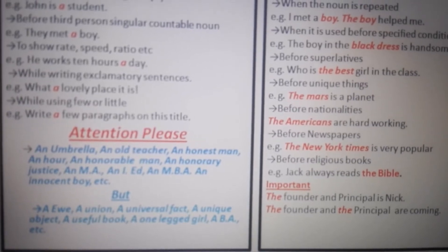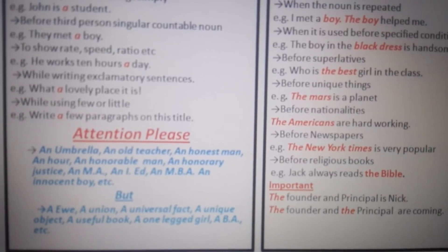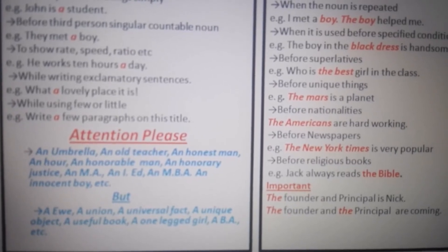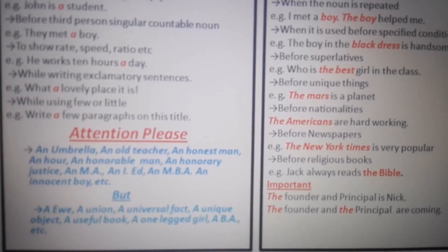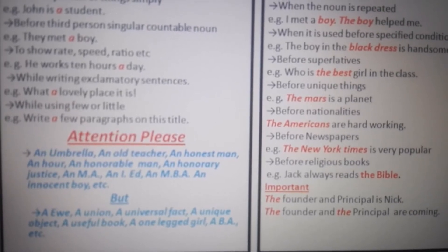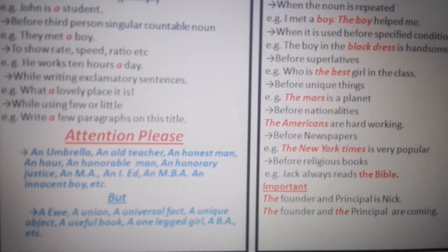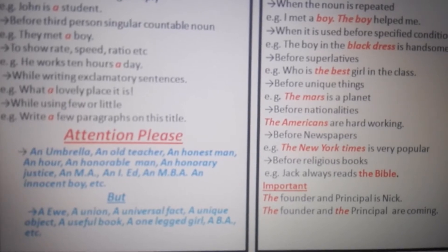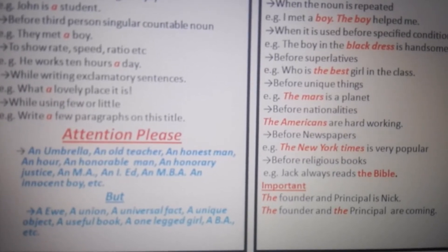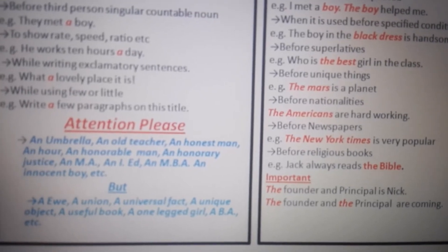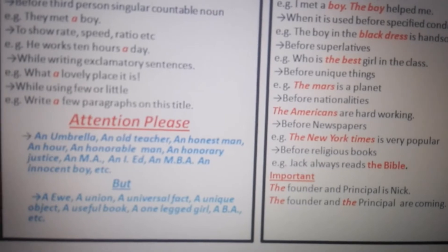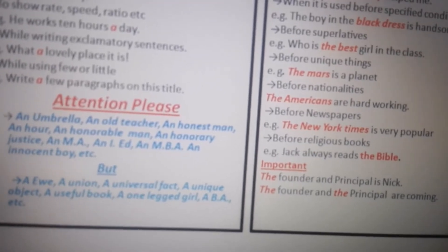An MA — 'M' produces a vowel sound, that's why we use 'an' before 'M'. An IED — before 'IED' we use 'an' because 'I' produces a vowel sound. An MBA — same rule. An innocent boy — because 'innocent' produces a vowel sound, that is why we use 'an' before the word 'innocent'.